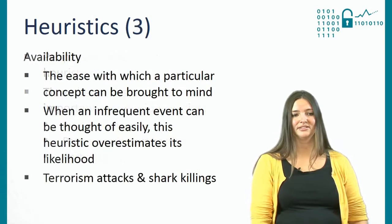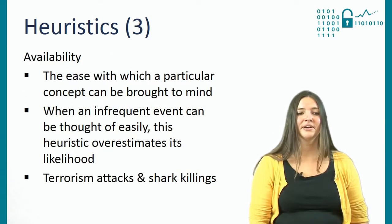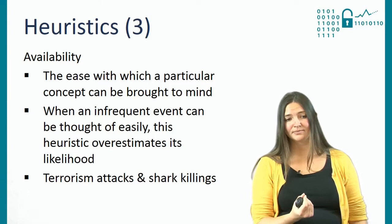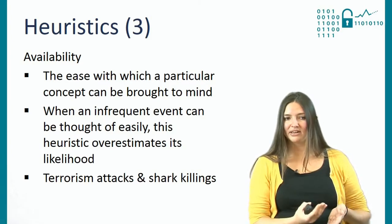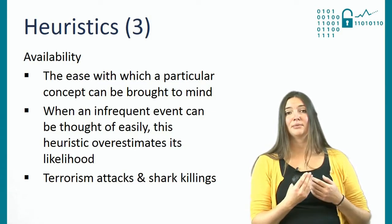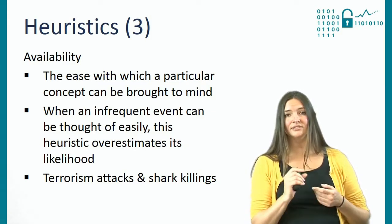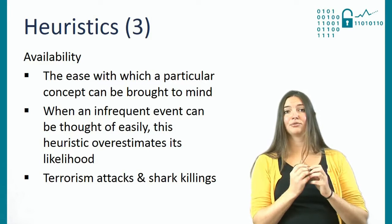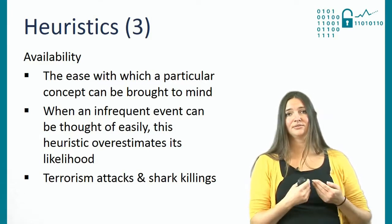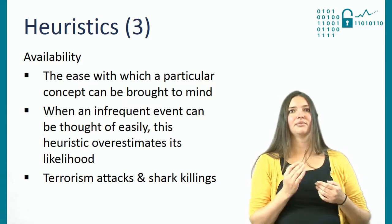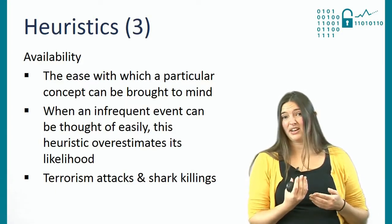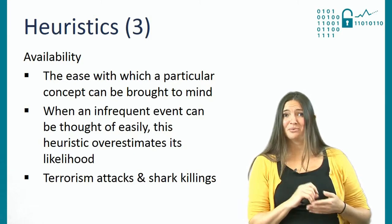Starting with the availability heuristic — that is the ease with which a particular concept can be brought to mind, for example because it's been in the media a lot. So when a very infrequent event happens but it can be thought of easily, this heuristic is very likely to cause it to be overestimated. For example, the chance of actually dying in a terrorist attack is very small — you're more likely to die when you just cross the street on your way to work.